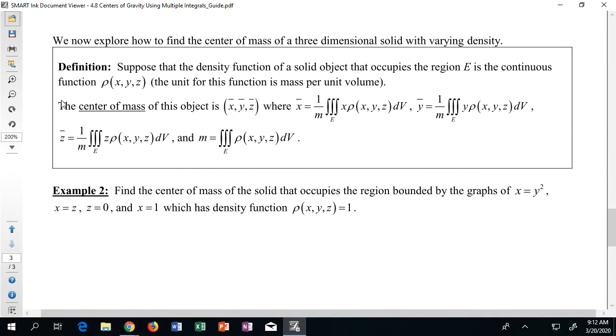All right, this is our last video here for section 4.8 with centers of mass, but we're going to take a look at how we could actually generalize the idea of finding centers of mass to three-dimensional objects. So take a look here. The definition says suppose that the density of a solid object that occupies the region E in three space is continuous. So imagine I plugged in x, y, z and I could immediately find the density at any point on the solid.